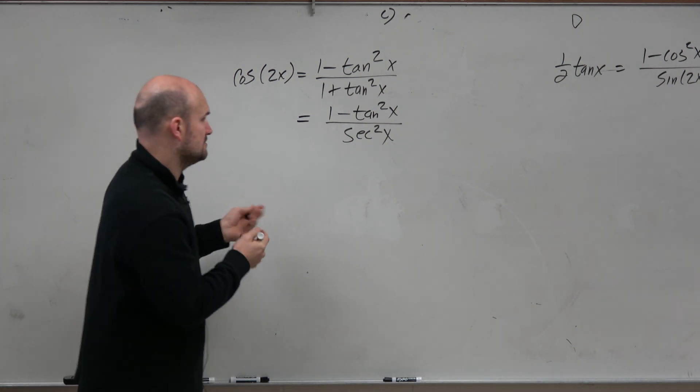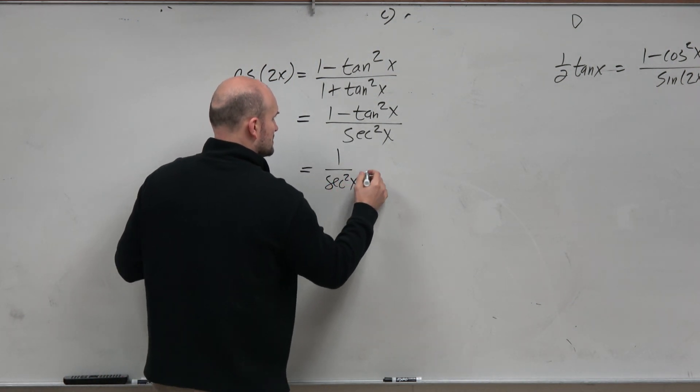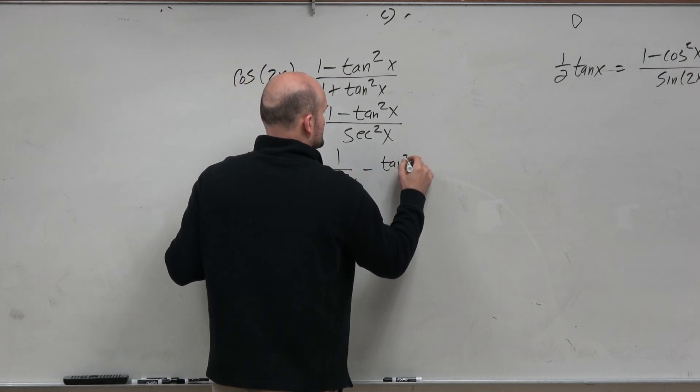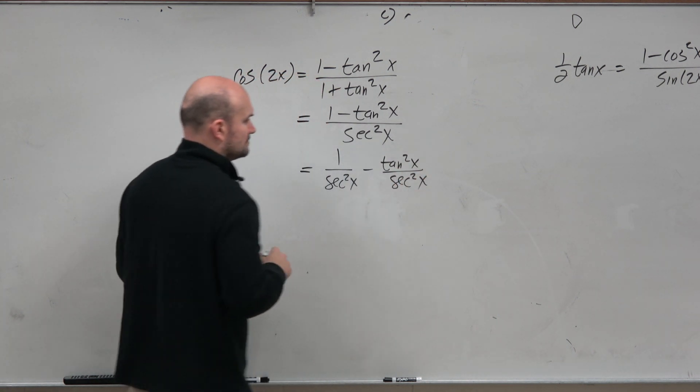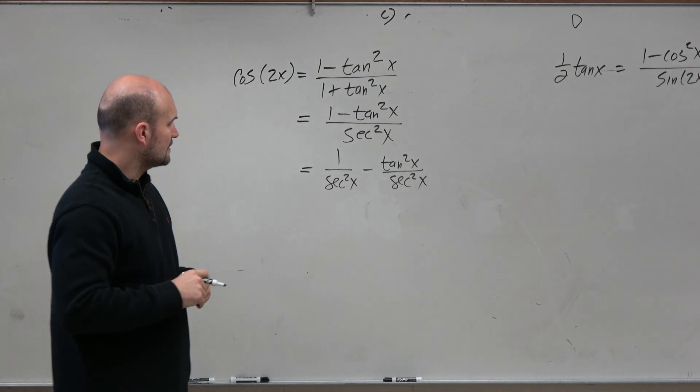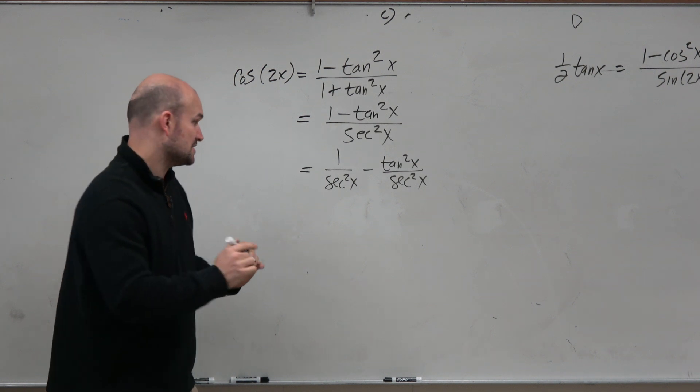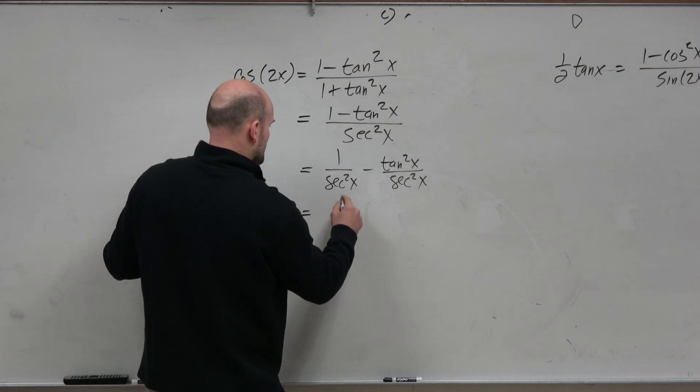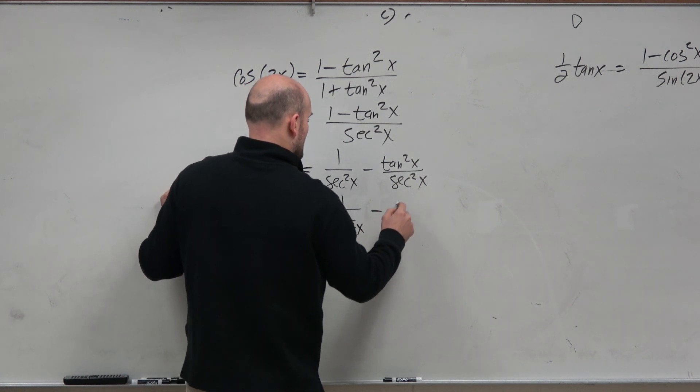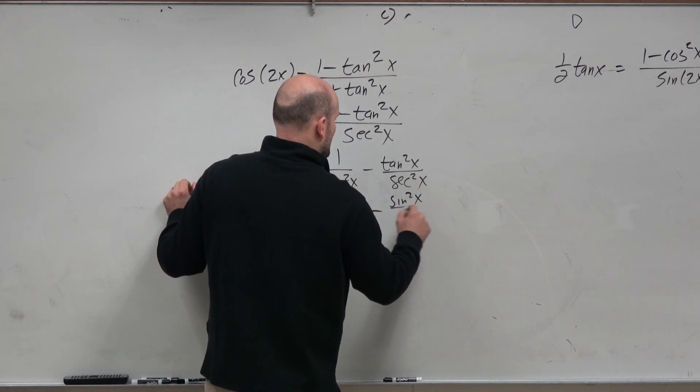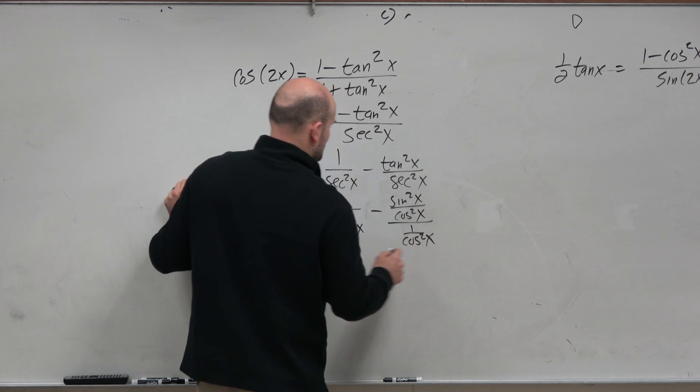Now, I know I could distribute that to both terms. So this would be 1 over secant squared of x minus tangent squared of x all over secant squared of x. And I recognize, again, now it might be helpful to write everything in terms of sines and cosines to kind of see what's going on here. So this is really 1 over cosine squared of x minus sine squared of x over cosine squared of x all over 1 over cosine squared of x.